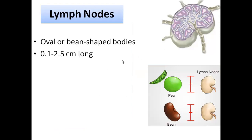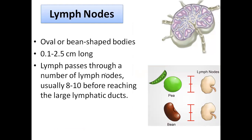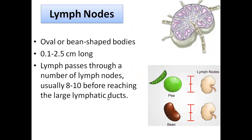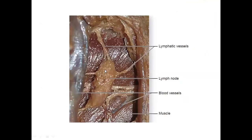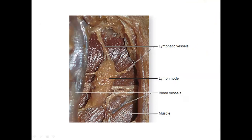Lymph nodes are oval or bean-shaped bodies, 0.1 to 2.5 centimeters long. Lymph passes through a number of lymph nodes — usually 8 to 10 — before reaching large lymphatic ducts like the thoracic duct or right lymphatic duct. Lymph nodes appear pink in the living body and brownish in a cadaver. When we do dissection, we come across structures like this which are lymph nodes. Based on the area where they are present, they are named differently.